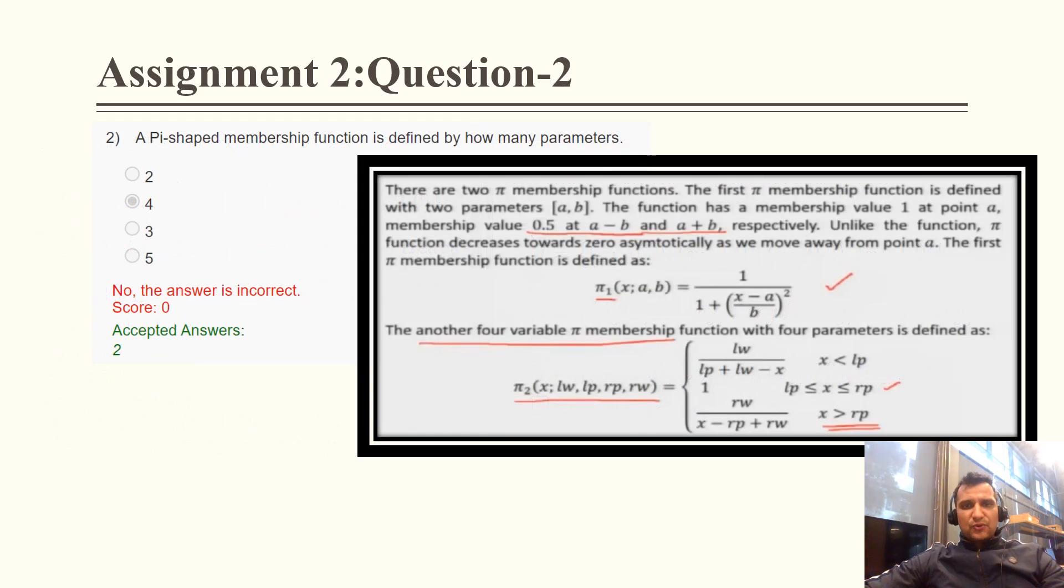Assignment 2, Question 2: A PI-shaped membership function is defined by how many parameters? During the discussion, I already told you that in this question the parameters may be 2 or may be 4. In this particular section there are only two parameters that exist.